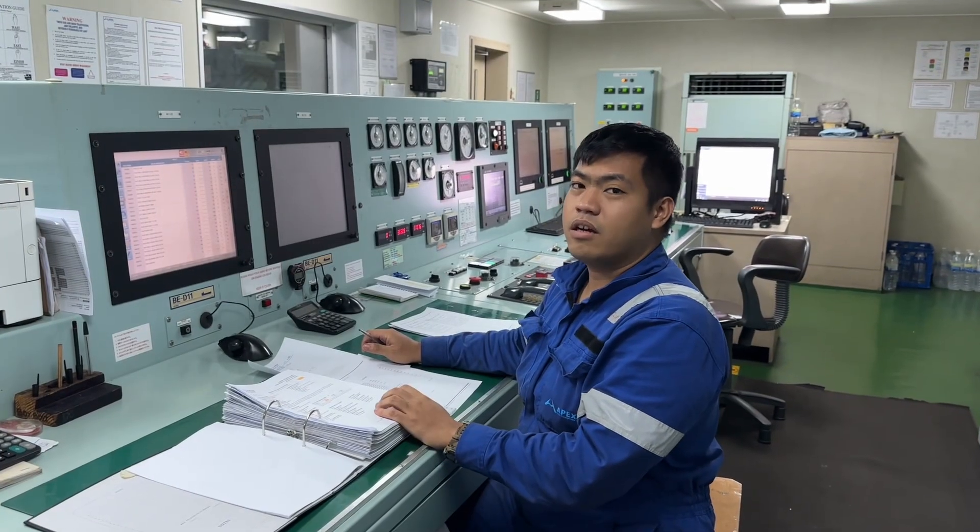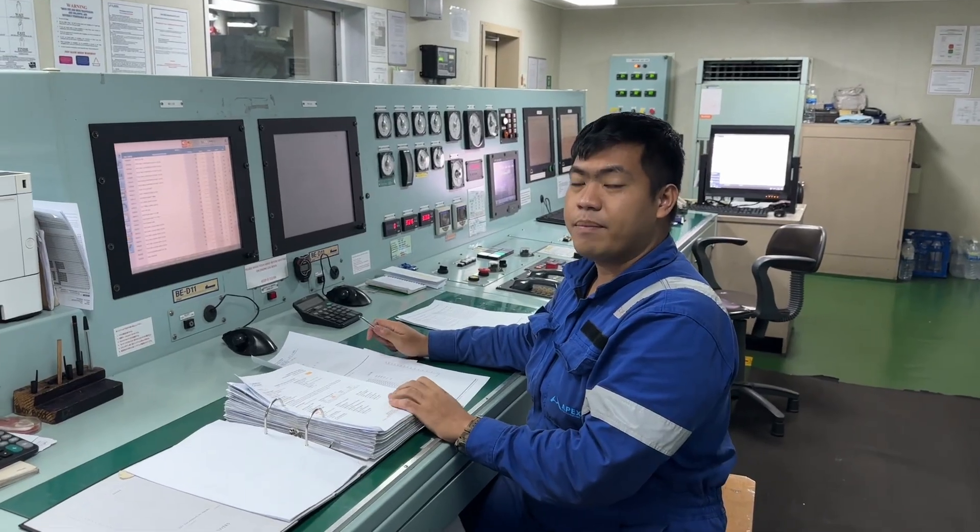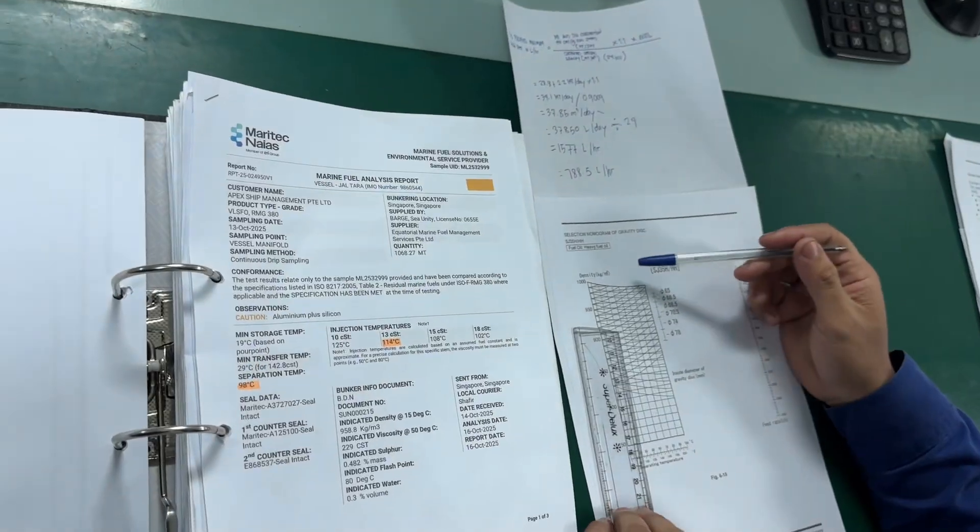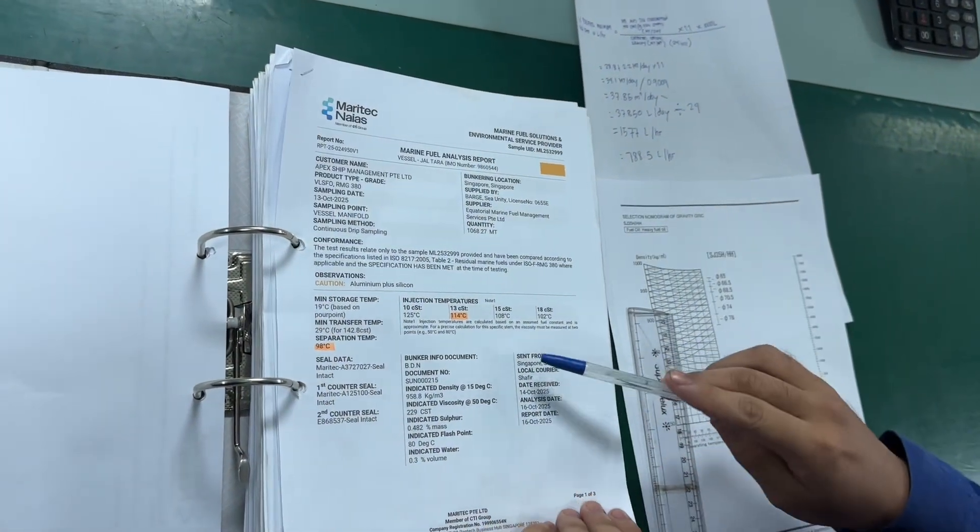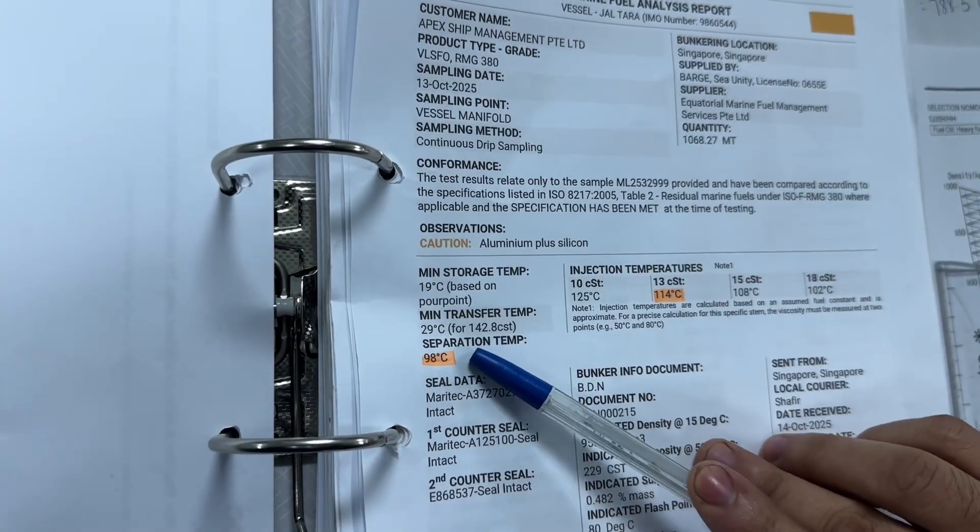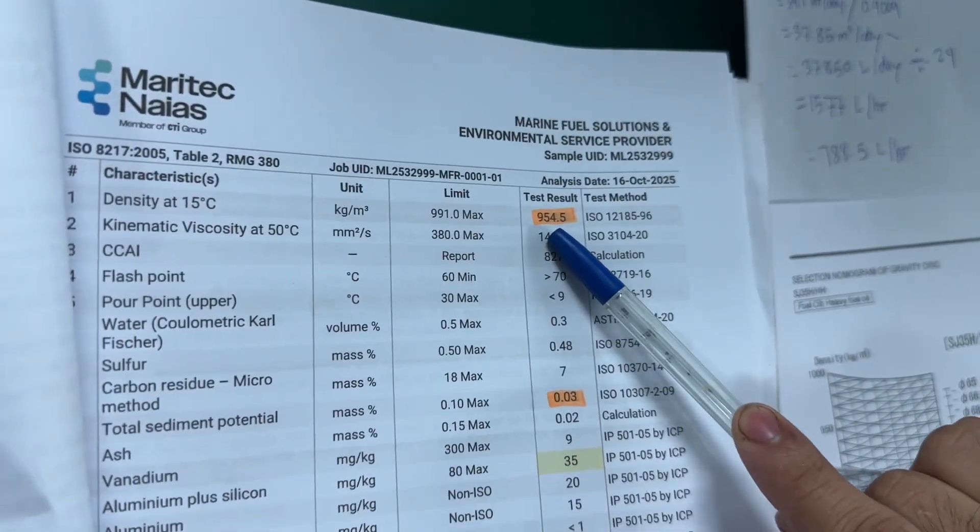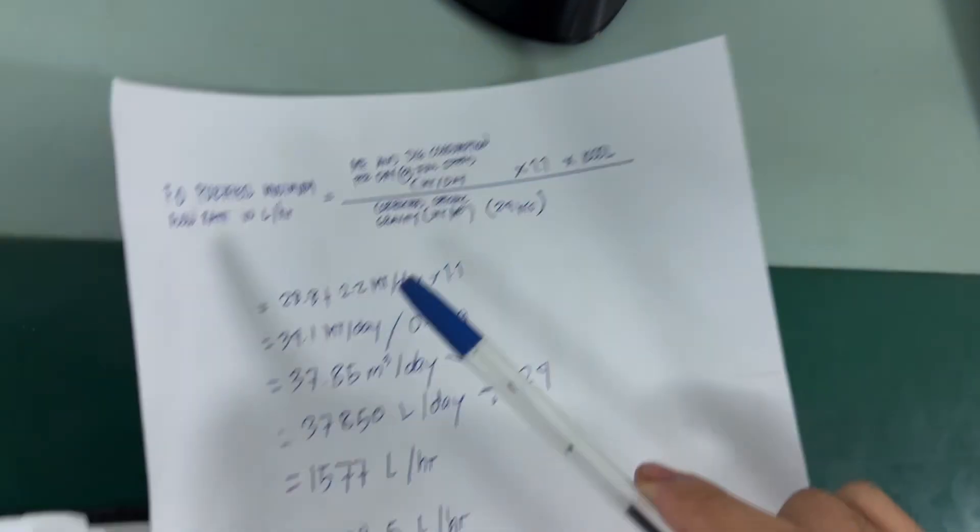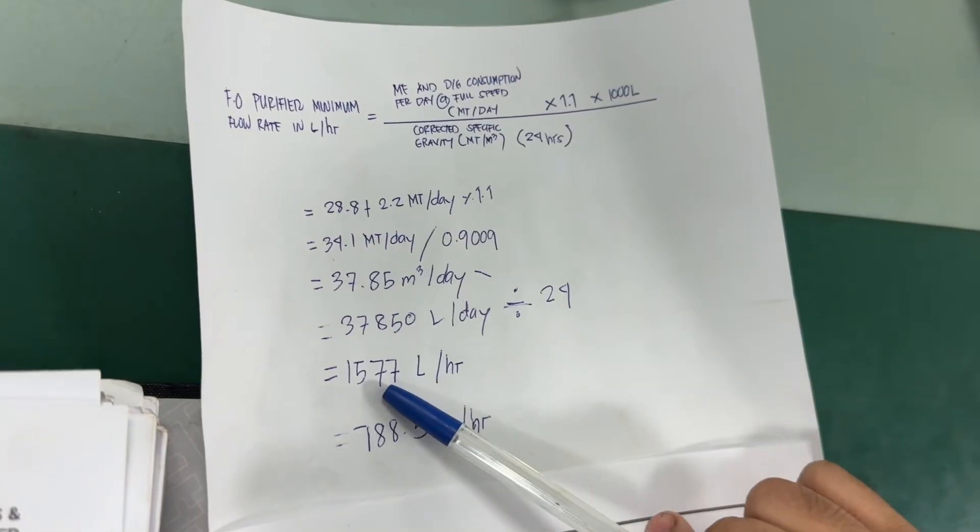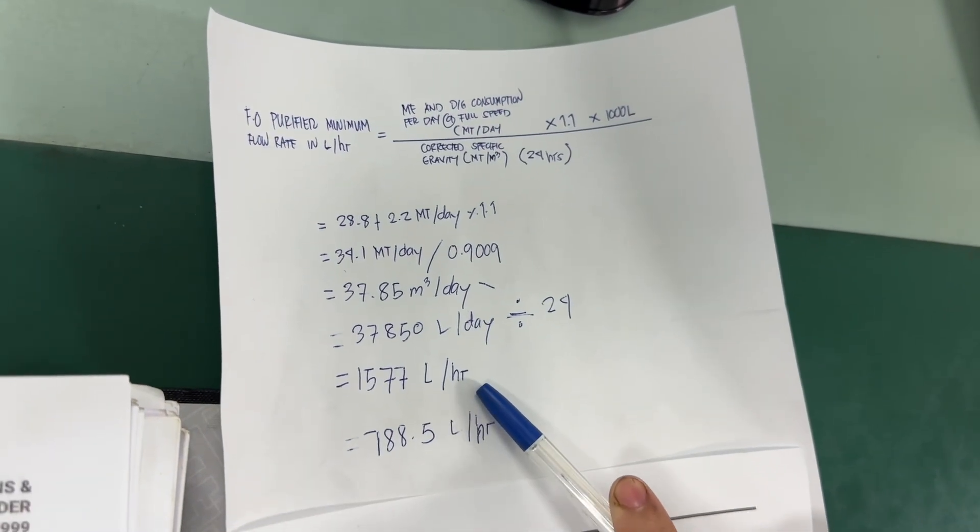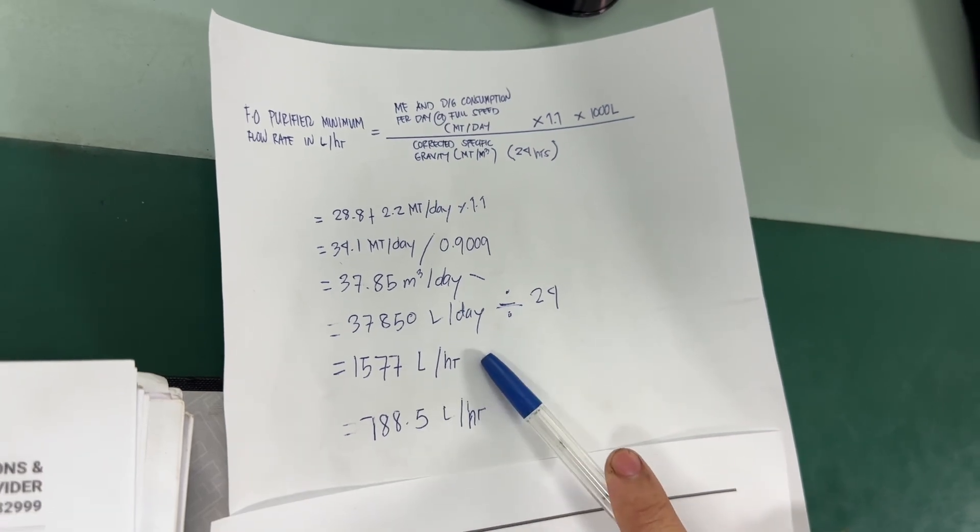How to select the correct gravity disk size by using nomogram? First, gather the data: the 98.6 liters separation temp, the 0.9545 density at 15 degrees, and the minimum flow rate 1577 liters per hour, or approximately 1,500.